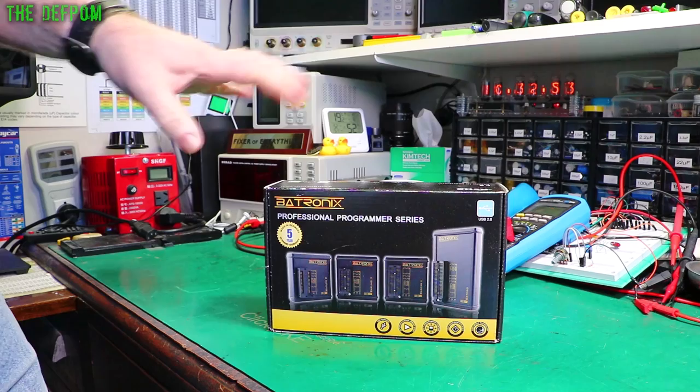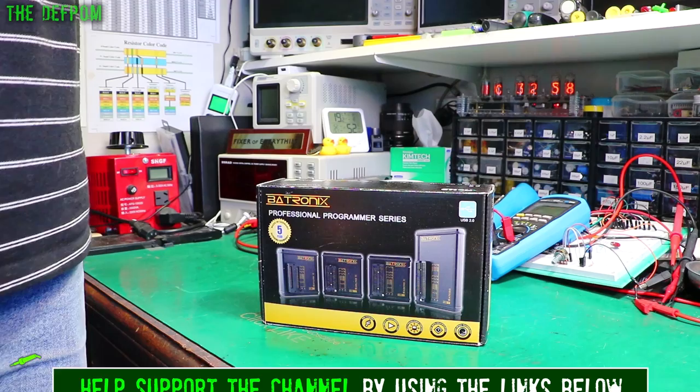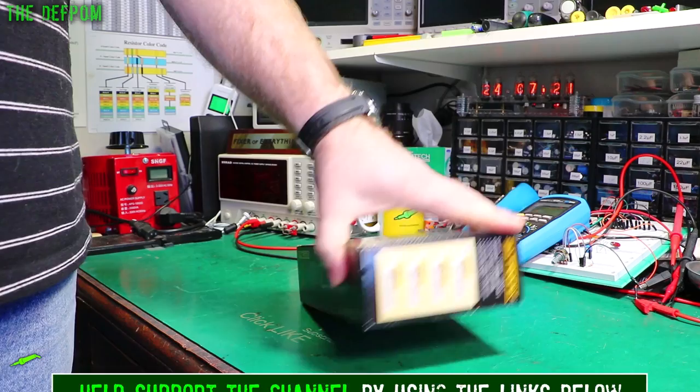So this is a Batronix EEPROM programmer. Now this is actually an older unit. I've had this for a while. It's actually my own unit. Now the reason this has been posted to me is because I lent it out to someone on the EVblog forum.